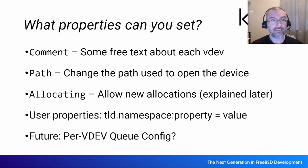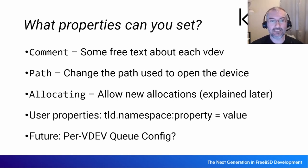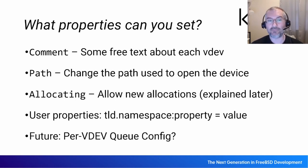What properties do you get? The first is a comment — every VDEV has a short text string where you can store information about it; that was already there, I just hooked it up. One of the other writable properties is the path to the VDEV — what device it actually is — which solved a particular problem I had frequently. There's also an 'allocating' property that allows you to queue up multiple devices for removal more efficiently. And then we have user properties: the same way you can set arbitrary user properties on a dataset with a namespace-colon-property=value format, you can set user properties on a VDEV.